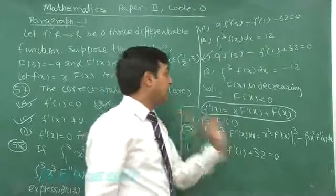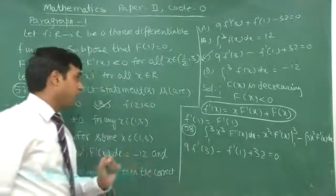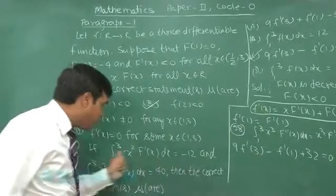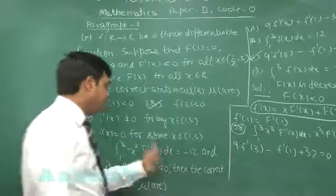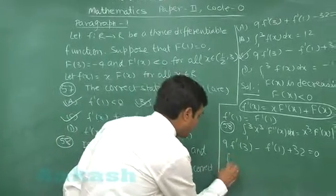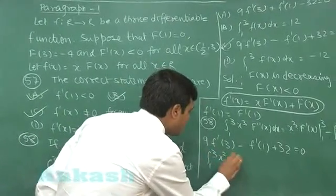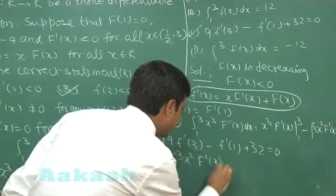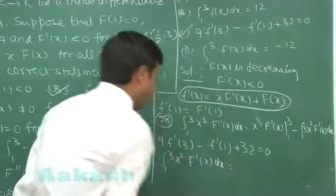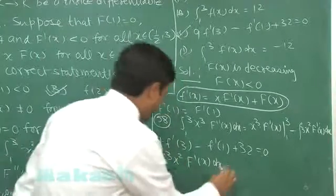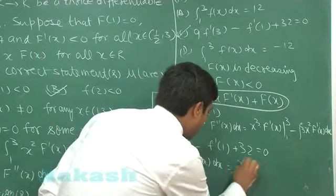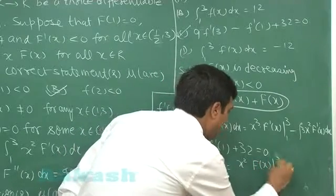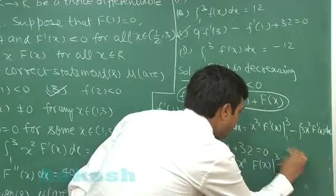Again we have to talk about 1 to 3 f(x) dx. Now 1 to 3, let us go for the first one. Now integrating it, 1 to 3 x square capital F dash x dx. On integrating it we obtain x square F(x) 1 to 3 minus 1 to 3, 2x F(x) dx.